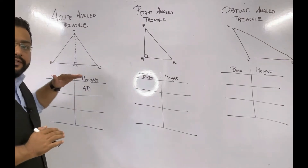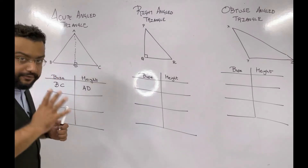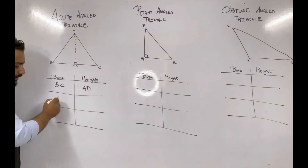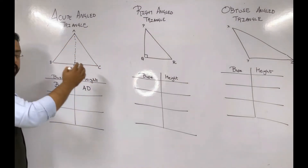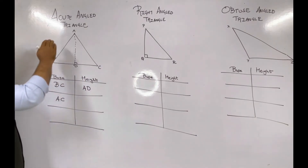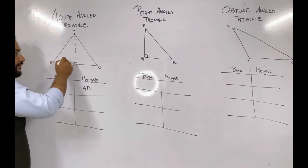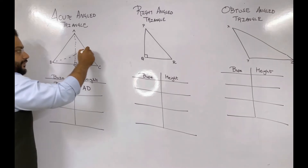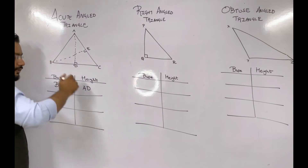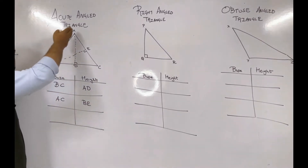Whenever you select a base, its height always starts from its opposite vertex. Now suppose I consider AC as base — its height will start from the opposite vertex, which is B. We name this point E, so the base is AC and its corresponding height is BE.